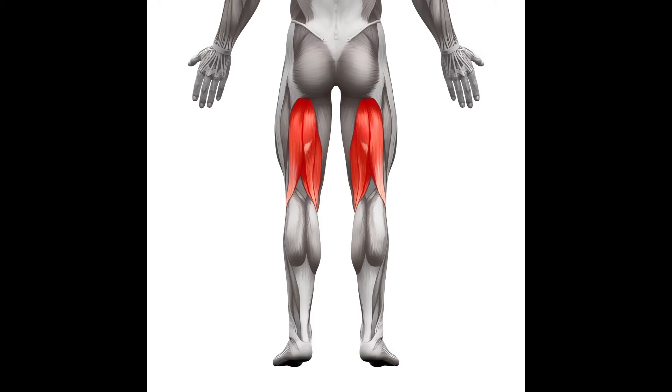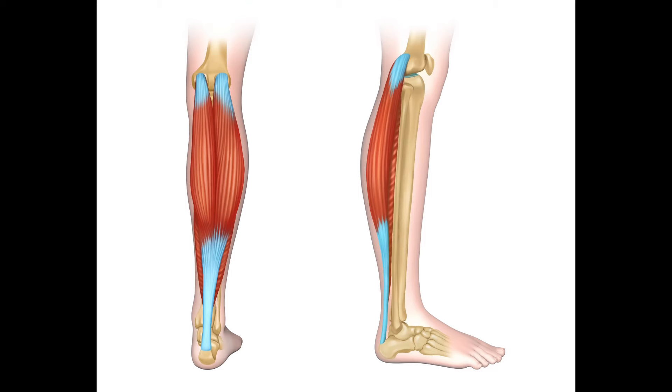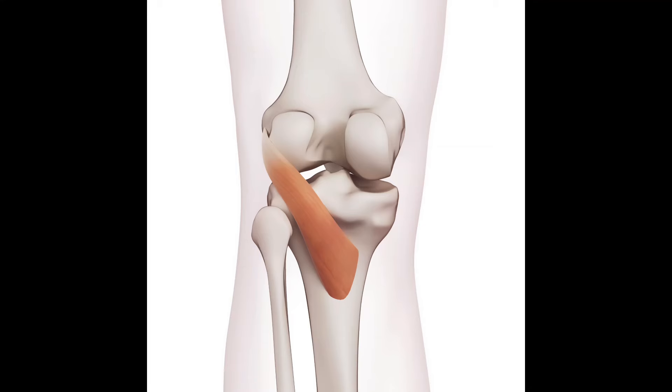The hamstring muscles come up from the hip and then go down and attach below that knee. The calf muscles — the gastroc and the soleus — come down below from that Achilles and then attach up above the knee on the backside there too. And then lastly is the popliteus muscle, which is an annoying little muscle right in the back that starts at the outside of the large leg bone and then travels right through the back of that knee space over to insert on the tibia, that lower leg bone.